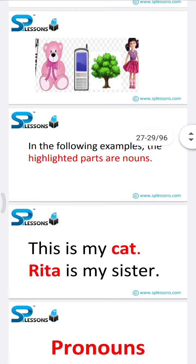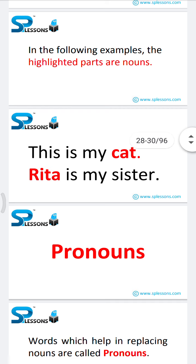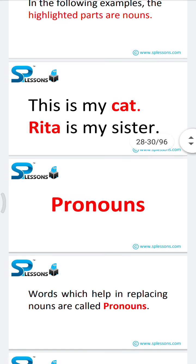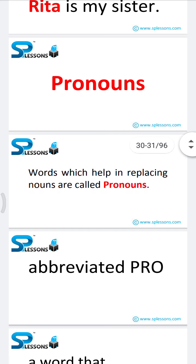In the following examples, the highlighted parts are nouns. 'This is my cat' — here 'cat' is a noun. 'Reetha is my sister' — here 'Reetha' is a noun.